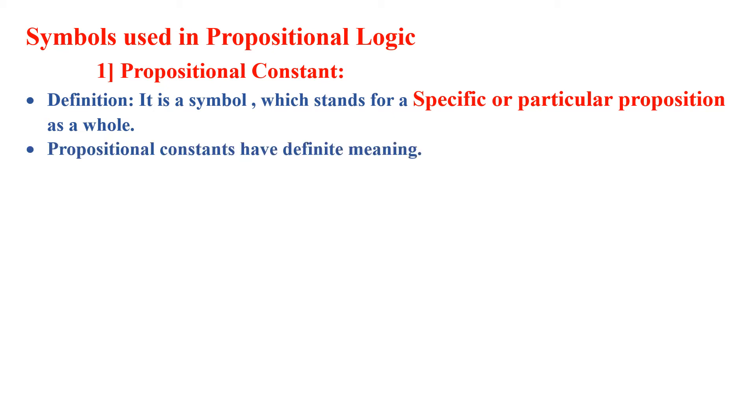Now, let us understand the symbols used in propositional logic. First is propositional constant. It is a symbol that stands for a specific or particular proposition as a whole. It has definite meaning.